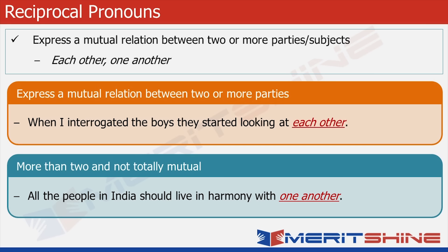I hope there is no confusion in understanding 'each other' and 'one another'. Let's try to understand it with help of three people named A, B and C. If I say they are helping each other, that means A is helping B and C, B is helping A and C, and C is helping A and B. When we say they help one another, it could mean A helps B, B helps C, but B need not necessarily help A. So there is not a one-to-one mutual relationship.